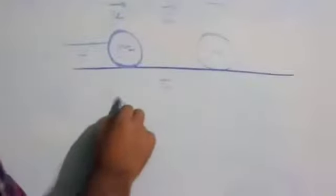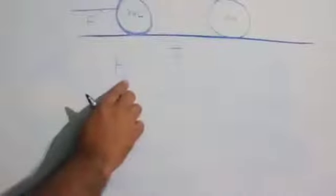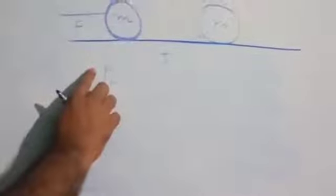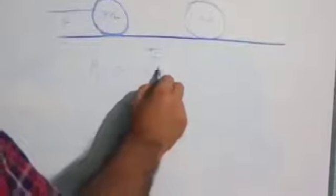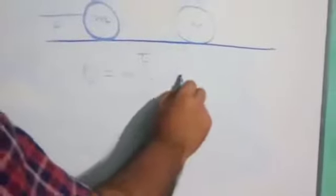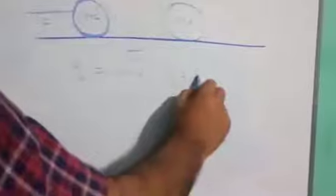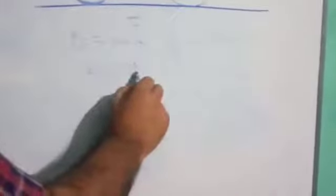Initial momentum P_i equals mass into initial velocity M×U. Final momentum P_f equals mass into final velocity M×V. Change in momentum ΔP = P_f minus P_i = M×V minus M×U.